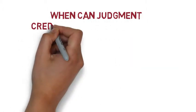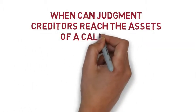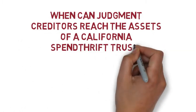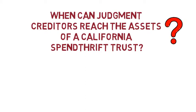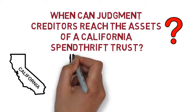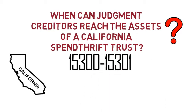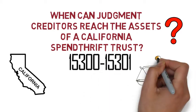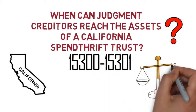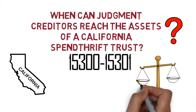When can judgment creditors reach the assets of a California spendthrift trust? In California, Probate Code sections 15300 and 15301 protect the principal and income of a spendthrift trust from judgment creditors.